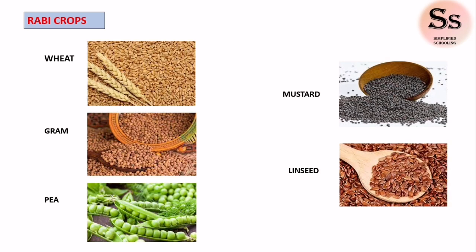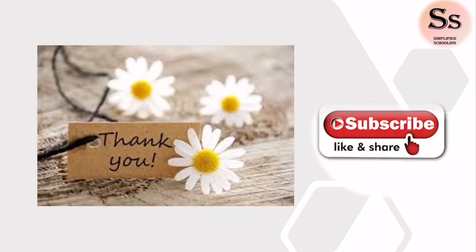So this was all about the Rabi crops and the Kharif crops, which are grown in the winter season and monsoon season respectively. Some plants are also grown during the summer season — these are pulses and vegetables, which are grown during summer at many places. Hope you find this video useful. Thank you for watching, and if you have any questions, please comment below. Also like, share, and subscribe to the channel Simplified Schooling.